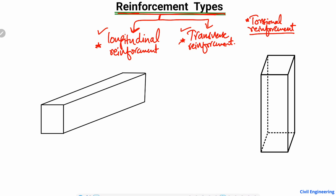We start with the longitudinal reinforcement. Keep in mind the longitudinal reinforcement is also known as the main reinforcement. If I show it in the case of a bending member or an axial member — for example, taking a beam — here is a beam.